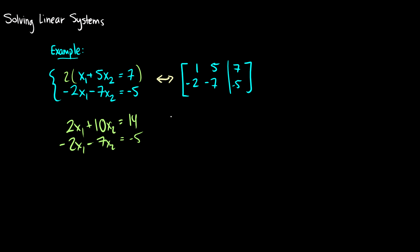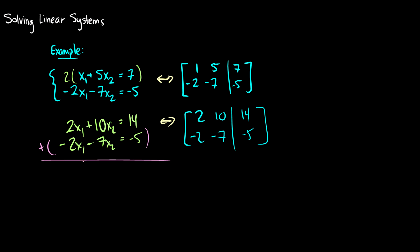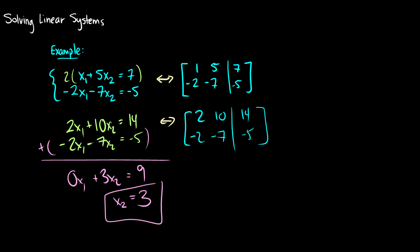Here's our new set of equations — these are equivalent to the first set. We can encode these as a matrix: 2, 10, 14, negative 2, negative 7, negative 5. Now we can add the two equations together to get rid of our x1s, and we're left with 0x1 plus 3x2 is equal to 9. So x2 is equal to 3.